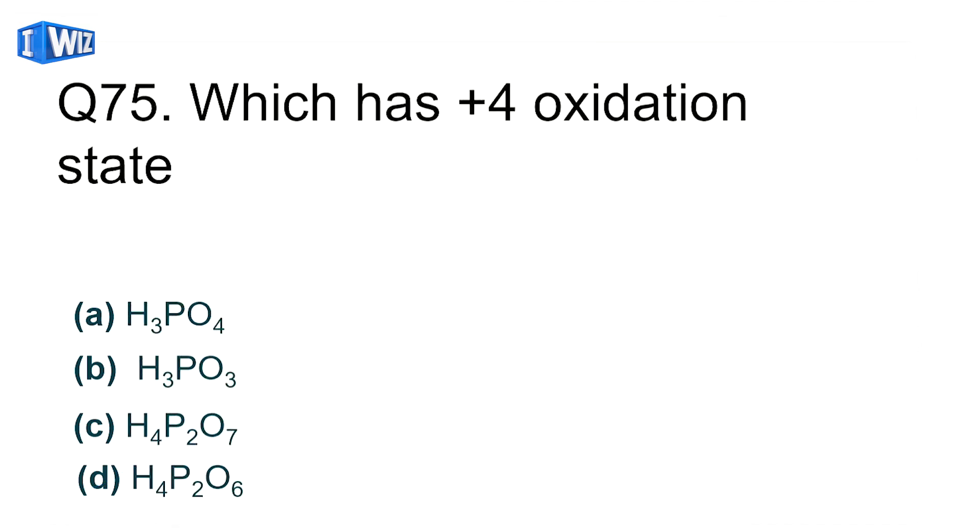Which has +4 oxidation state? If you calculate, D option is correct with four hydrogen atoms. Put x for phosphorus, oxygen is -2, so this becomes 2x - 8. This comes out to be 2x - 8 = 0, so 2x = 8, x = 4. D is the correct answer.